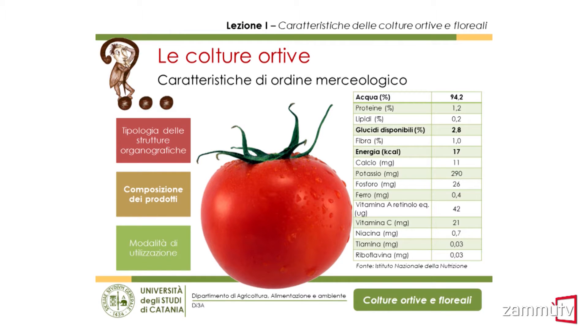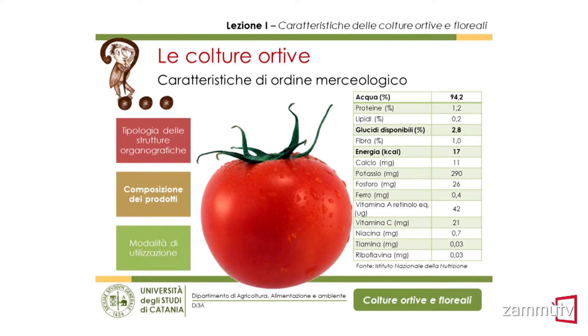Un aspetto molto importante riguarda la composizione dei prodotti. Sono organi in accrescimento, non completato, e questo determina una serie di caratteristiche. Ad esempio, la composizione del pomodoro mostra un contenuto di acqua piuttosto rilevante: in questo caso il 94%, ma si può arrivare anche al 98% in altri prodotti ortivi, come quelli da foglia. Sono prodotti importanti per la dieta perché assicurano un basso contenuto calorico, difficilmente superano le 20 kilocalorie per 100 grammi di prodotto.